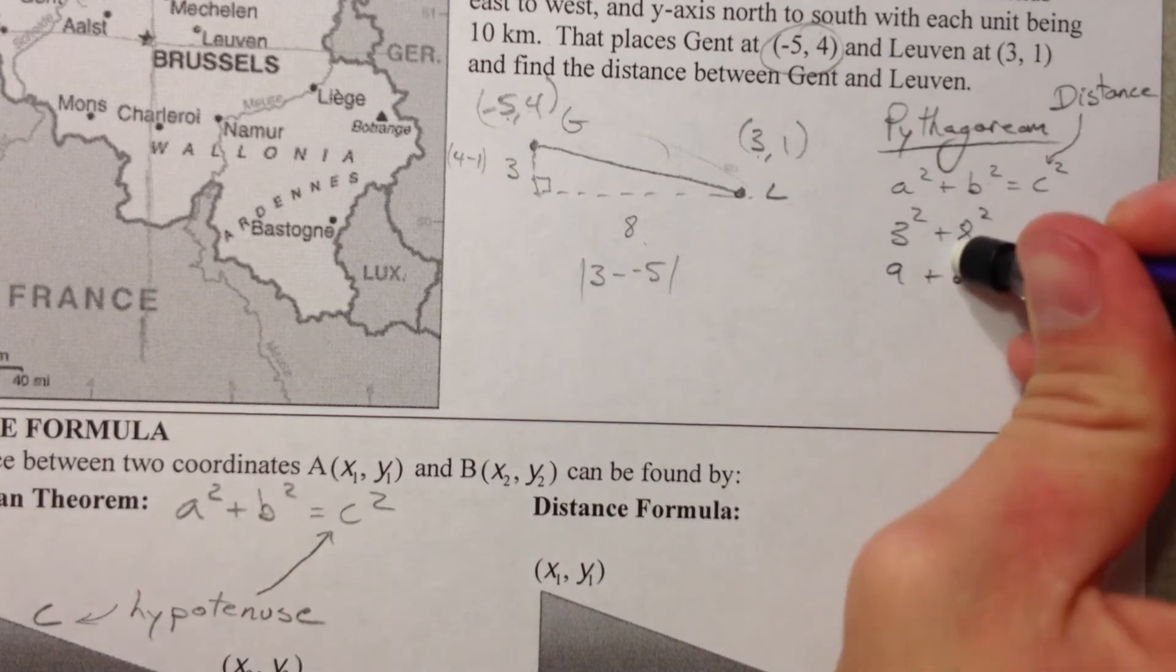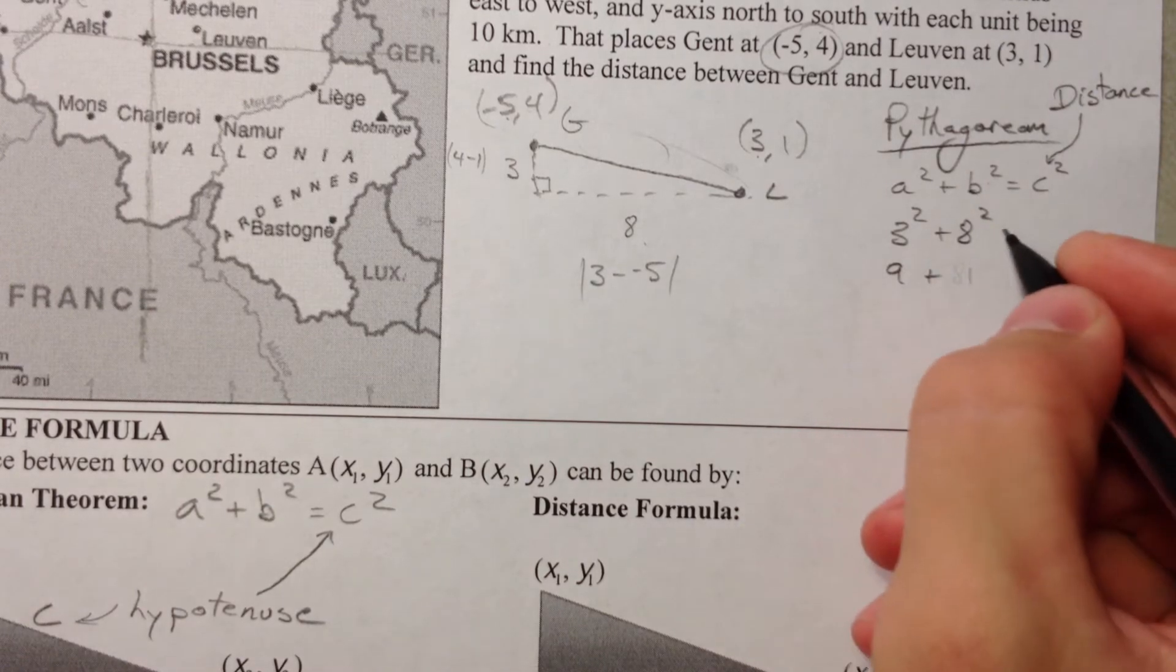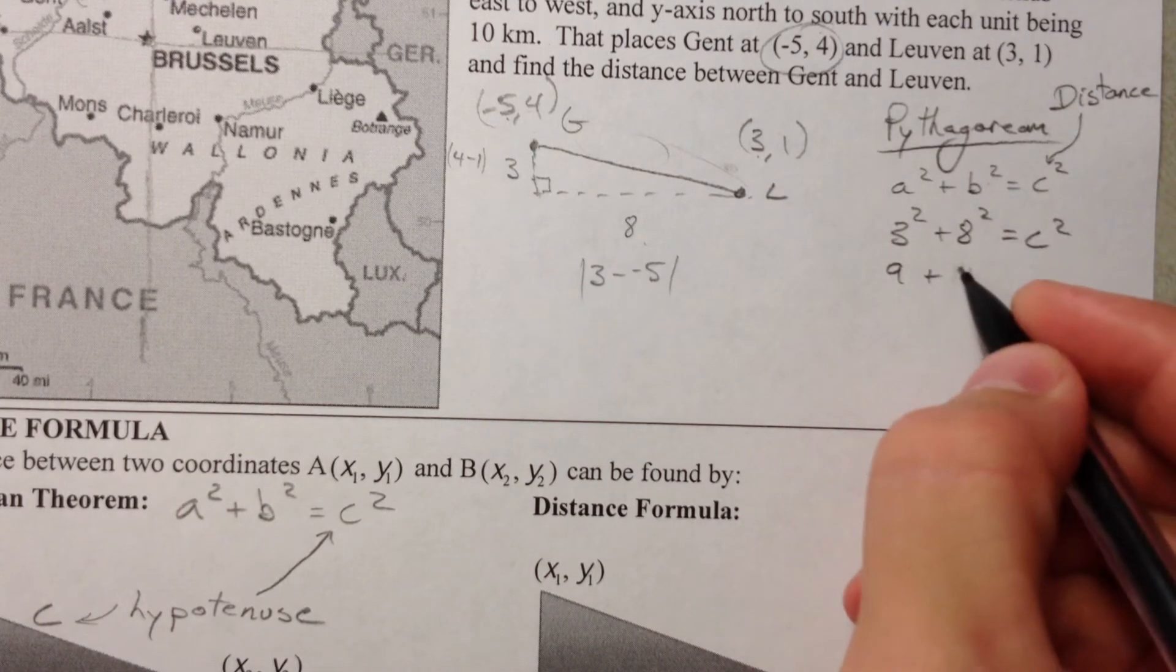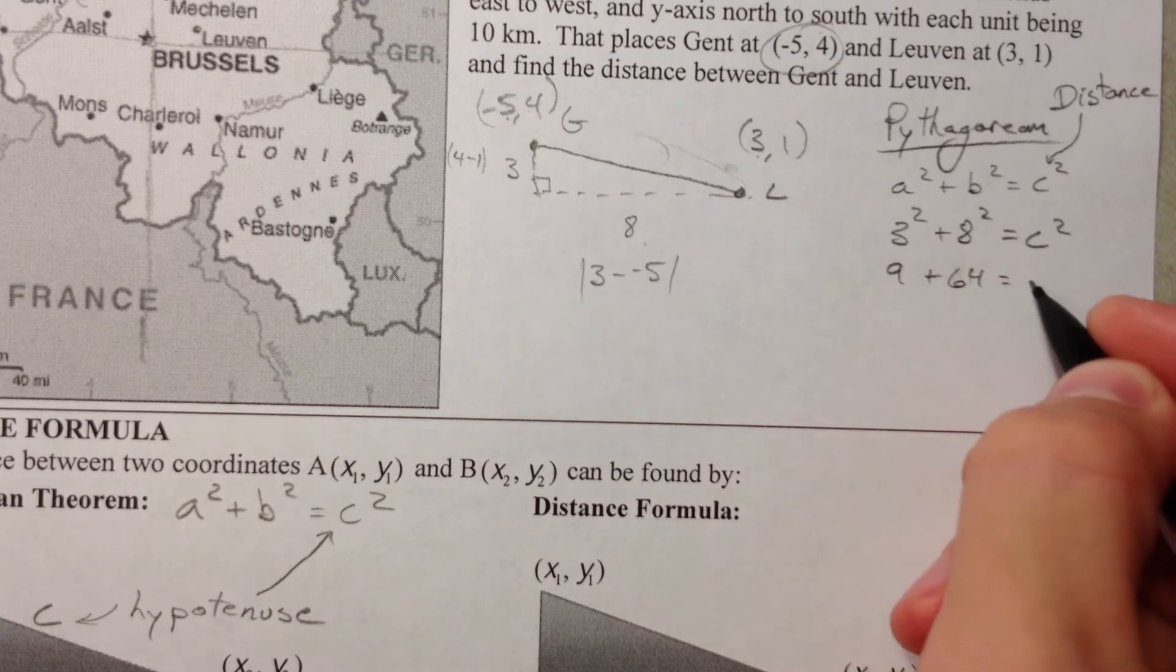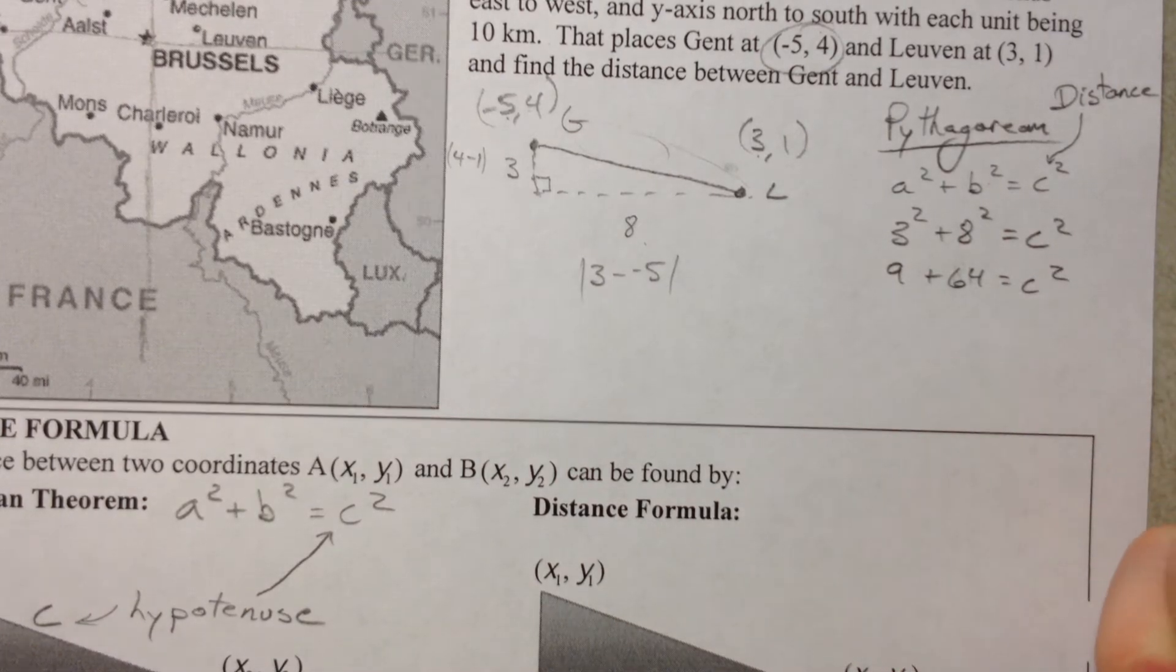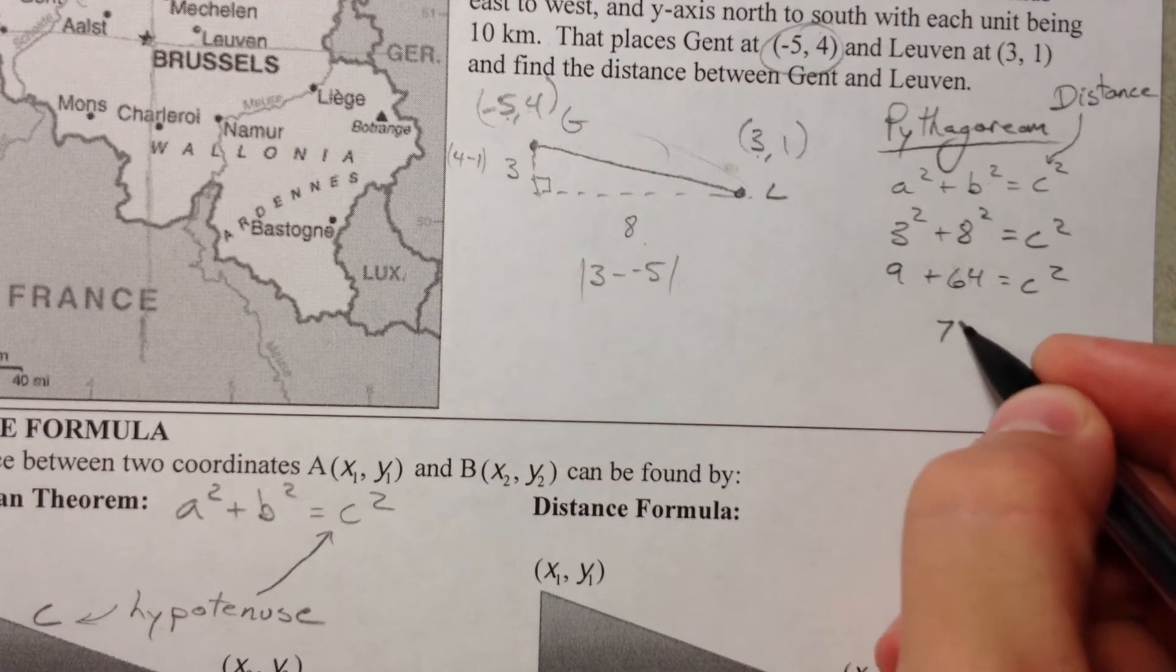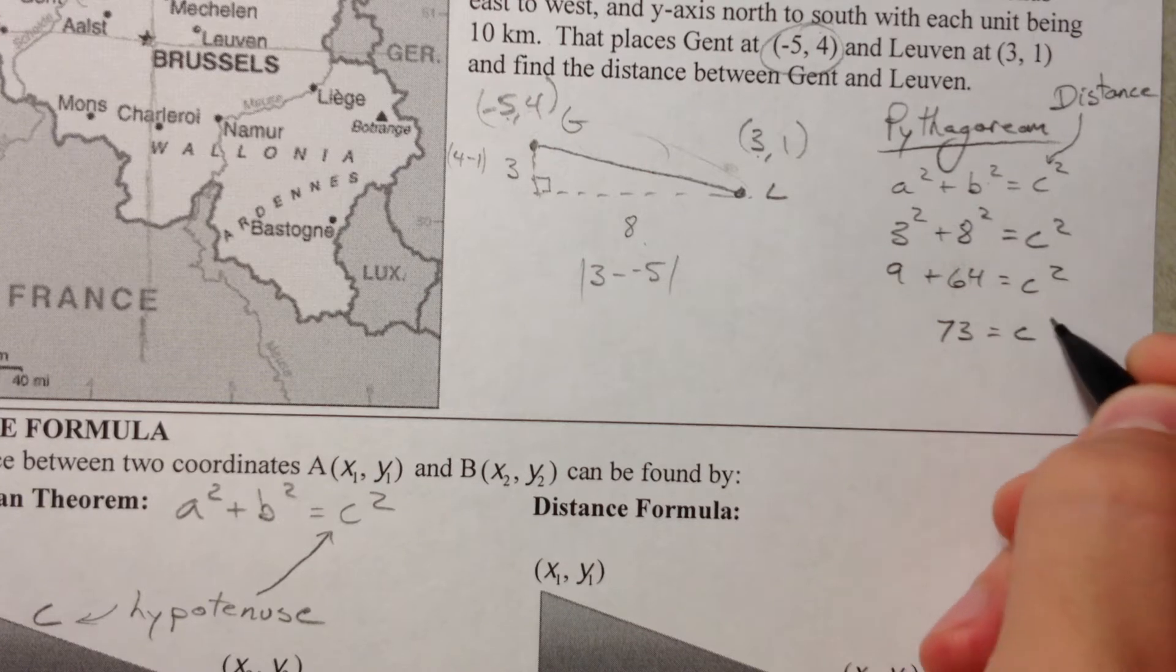And by 81, wow. Wow. And you guys are all shouting at your computers right now. 8 squared is 64. And so we have 9 plus 64. What is that? 73 is C squared.